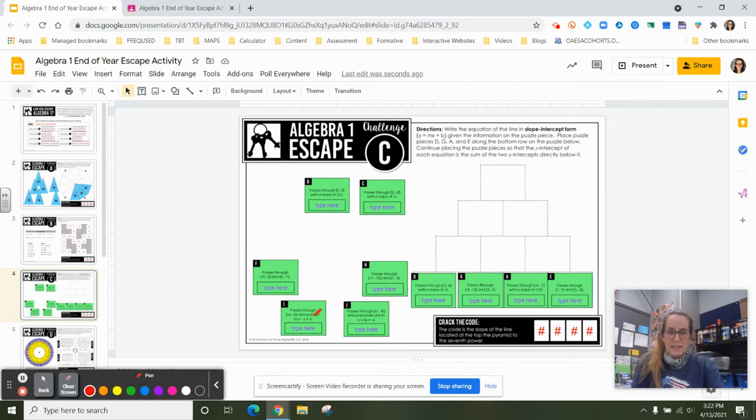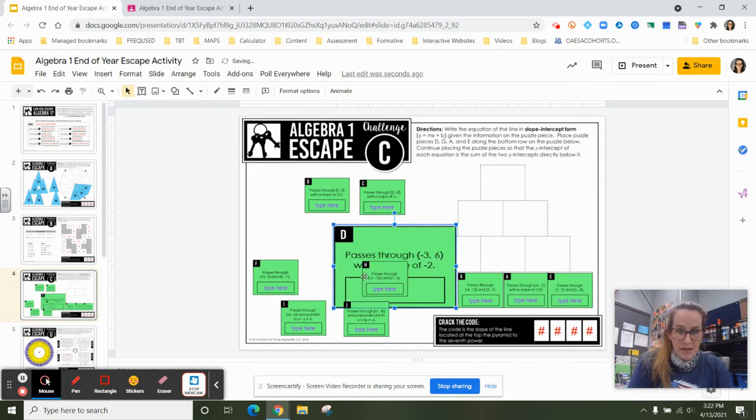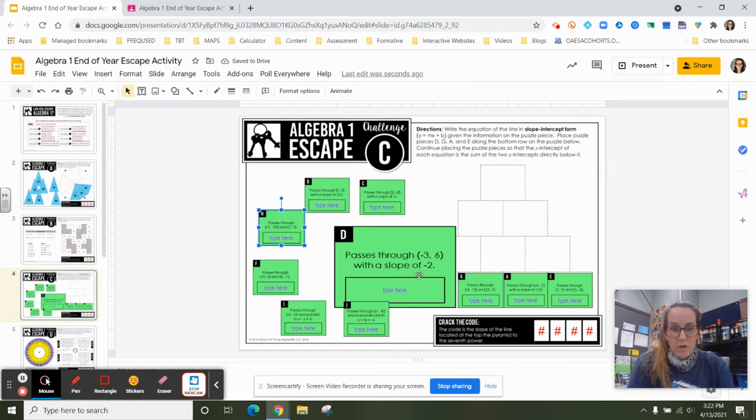If I take a look at D, and remember, you can always click and expand, right? If you grab your mouse, you can click and temporarily expand the puzzle piece to be able to see your information a little bit more easily. So for old eyes like mine, I need to do that.